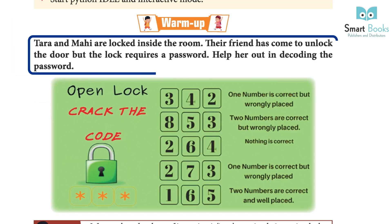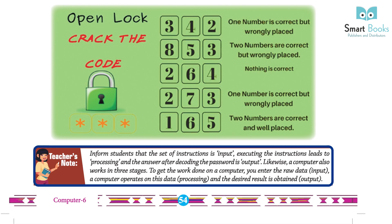Tara and Mahi are locked inside the room. Their friend has come to unlock the door, but the lock requires a password. Help her out in decoding the password. The set of instructions is input; executing the instructions leads to processing; and the answer after decoding the password is output. Likewise, a computer also works in three stages: you enter the raw data (input), a computer operates on this data (processing), and the desired result is obtained (output).